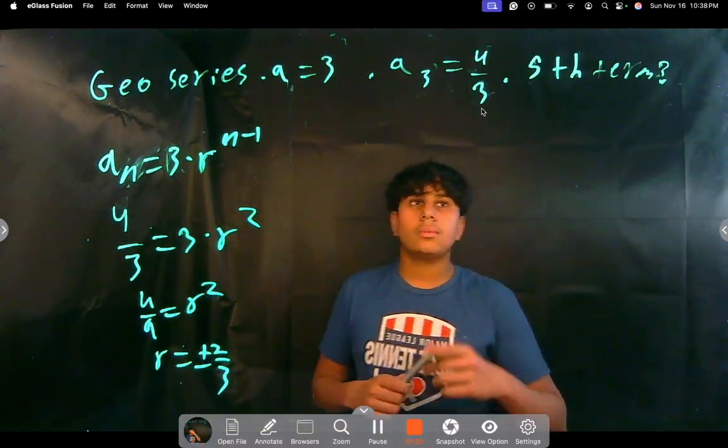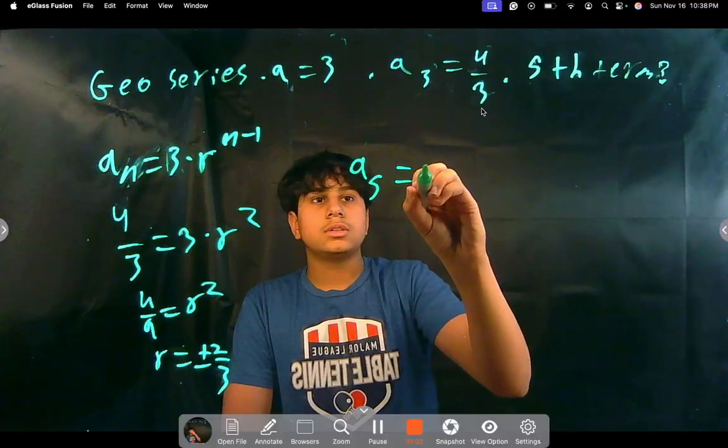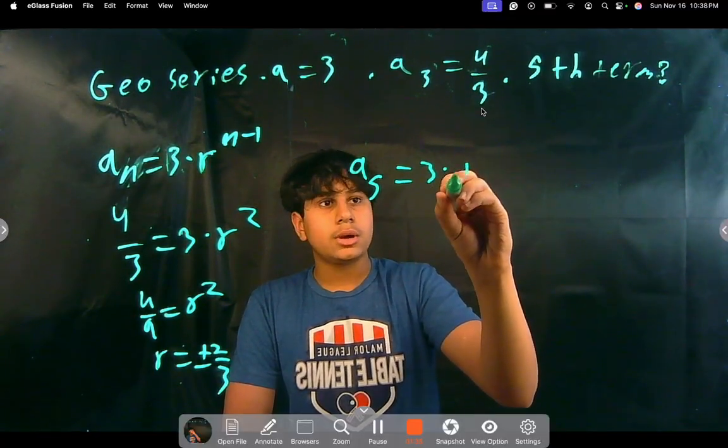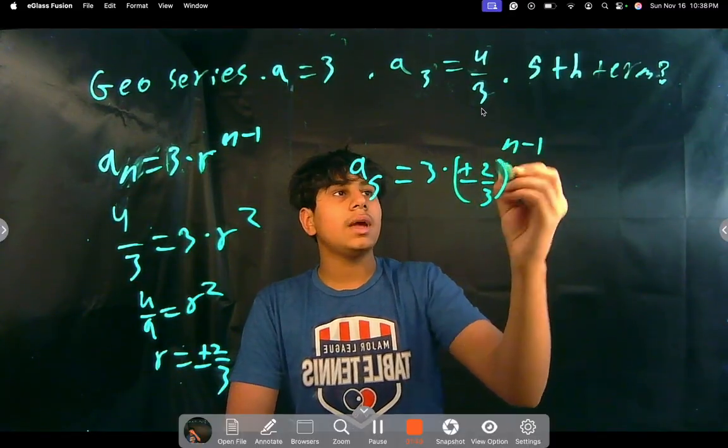But we don't really need that because we're asked to find the 5th term, right? a of 5, right? You'll see why this makes sense. Equals 3 times plus or minus 2 thirds, right? To the power of n minus 1, right? n here is 5.